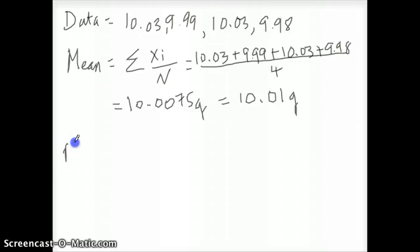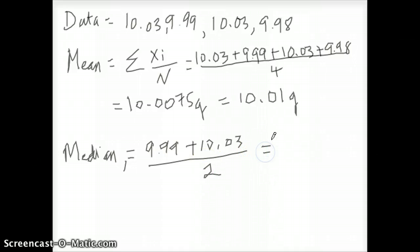The median can also be determined. First you need to order these four numbers from small to large. This would be the smallest number 9.98, the second number 9.99, and then the last two are the same, 10.03 and 10.03. The middle two numbers end up being these two. Since there's four measurements, the median would be the average of these two middle numbers. It'll be 9.99 plus 10.03 divided by 2, which gives you 10.01 as well.